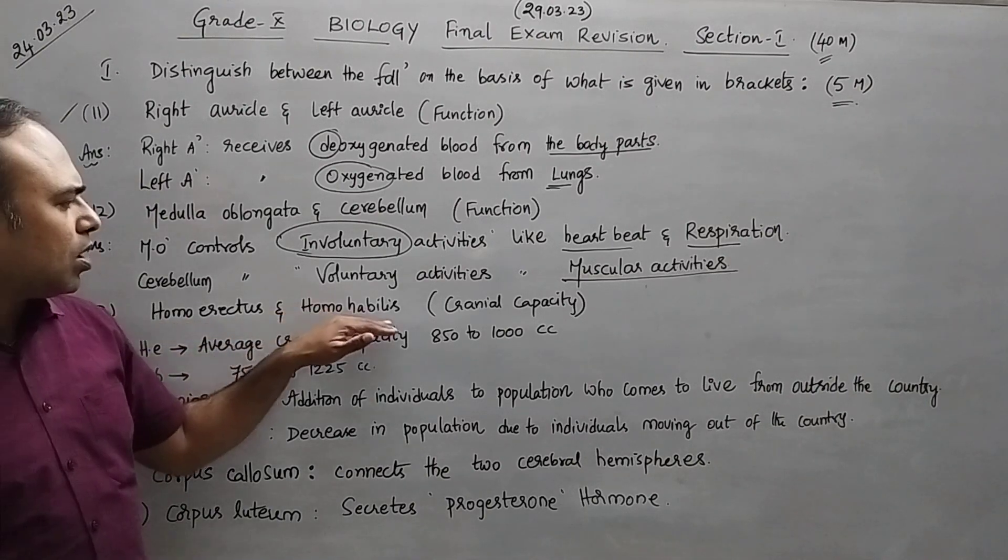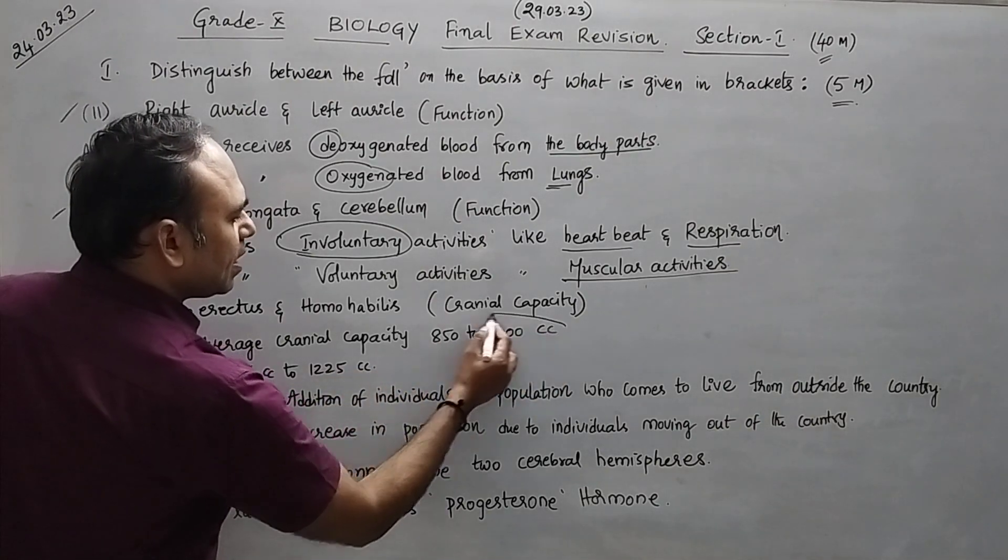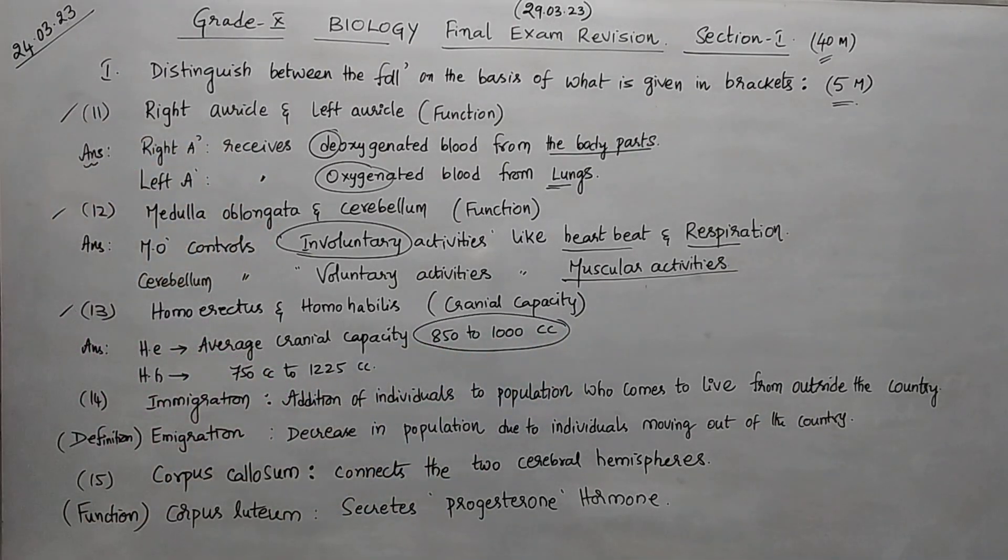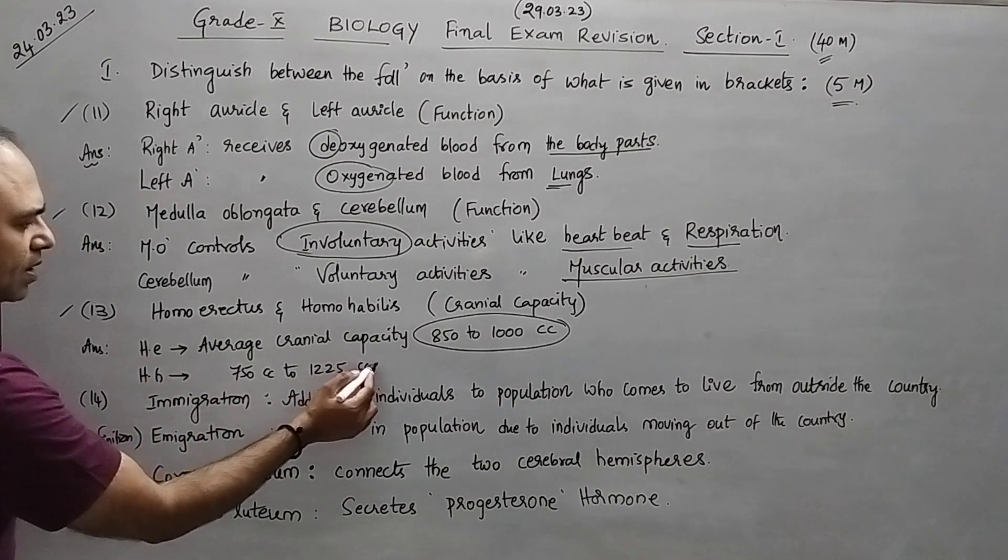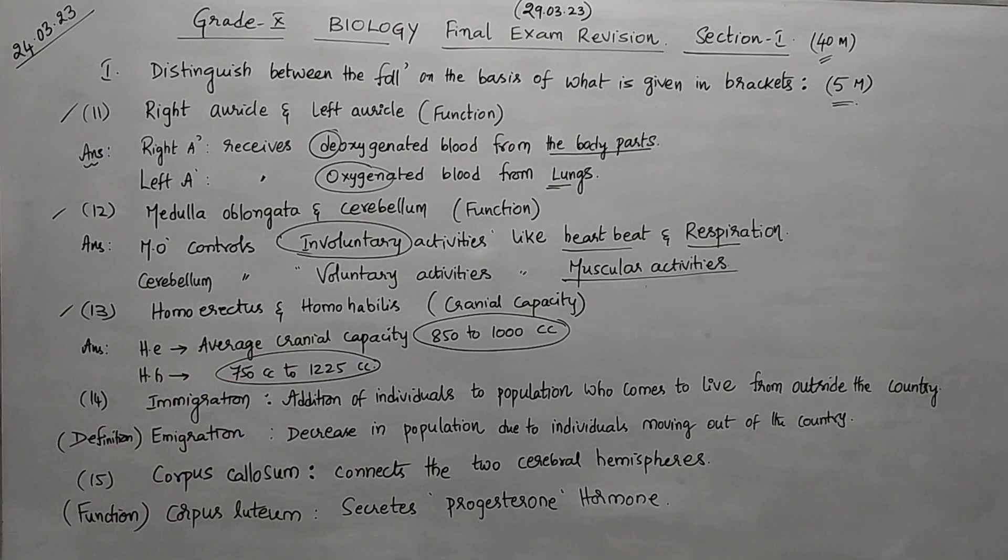Thirteenth, Homo erectus and Homo habilis, cranial capacity. What is the difference? Homo erectus has cranial capacity between 850 to 1000 cc, while Homo habilis has the cranial capacity between 750 cc to 1225 cc. Remember the values. Next, what is the difference between immigration and emigration in terms of definition?